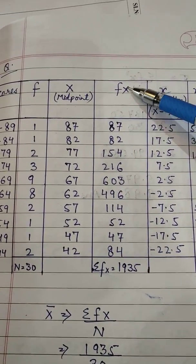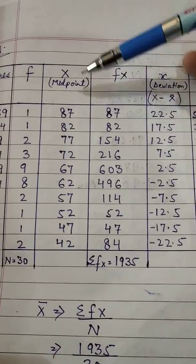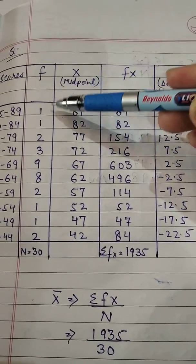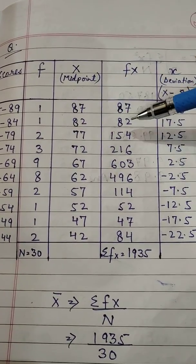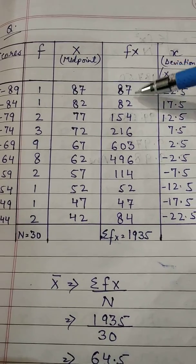Now you will calculate fx. Fx is what? F multiply by x. Toh yeh dhekhiye. 87 ones are 87. 82 ones are 82. 77 twos are 154. Like this way you will calculate.